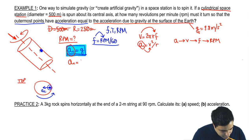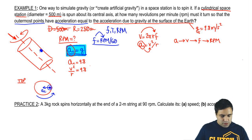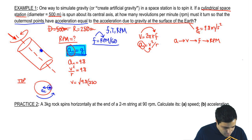So AC is 9.8. AC is also V squared over R, and that equals 9.8. So I'm going to be able to solve for V. V equals the square root of 9.8 times R. R is 250. When I do this, I get 49.5 meters per second.